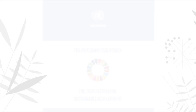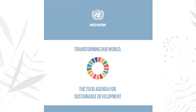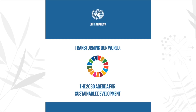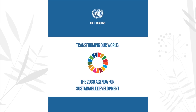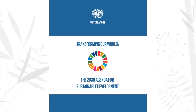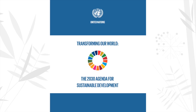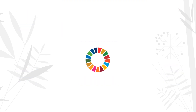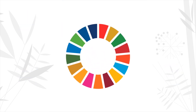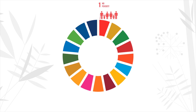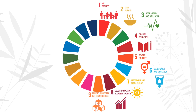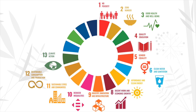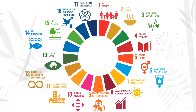The 2030 Agenda for Sustainable Development, adopted by all United Nations member states in 2015, provides a shared blueprint for peace and prosperity for people and the planet, now and into the future. At its heart are the 17 Sustainable Development Goals, the SDGs, which are an urgent call for action by all countries in a global partnership.